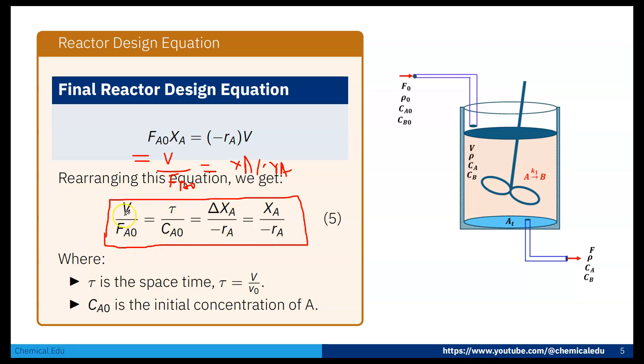Remember that V/FA0 equals tau/CA0 equals XA/(-rA). Also, tau is V*CA0/FA0. V/V0 is the volumetric flow rate; V/V0 is called space time. So V/FA0 equals tau/CA0 equals XA/(-rA). This is the reactor design equation for CSTR or MFR, mixed flow reactor.